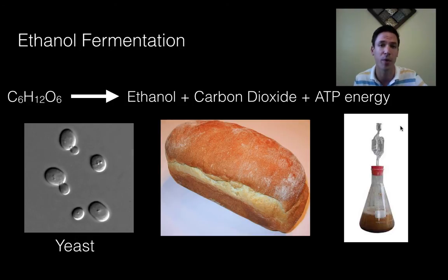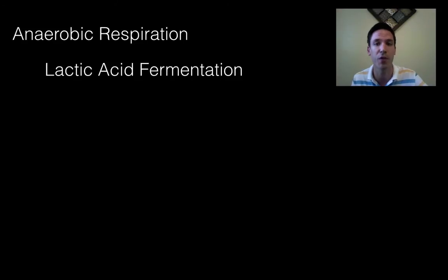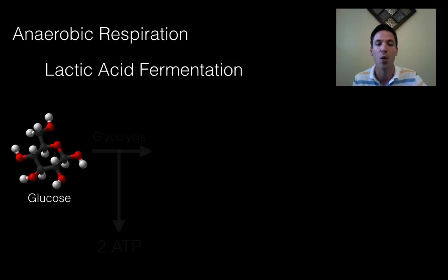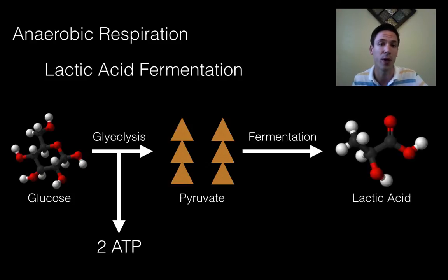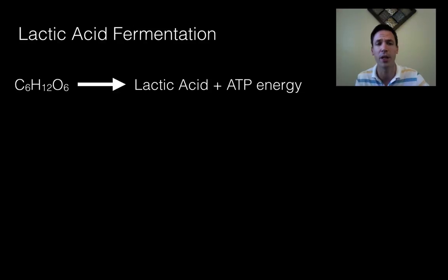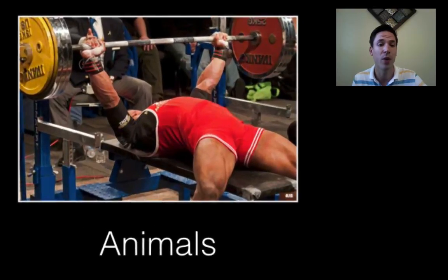The second type of fermentation is lactic acid fermentation, performed by different organisms. Instead of ethanol, these organisms produce lactic acid. The process is similar: start with glucose, undergo glycolysis to create two ATP molecules and pyruvate molecules, then use fermentation to break those down so glycolysis can continue — but this time producing lactic acid. The formula is: glucose (no oxygen needed) → lactic acid + 2 ATP.